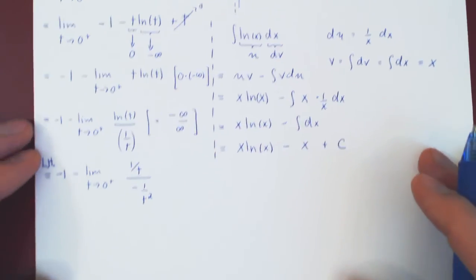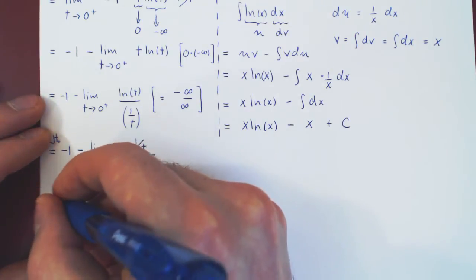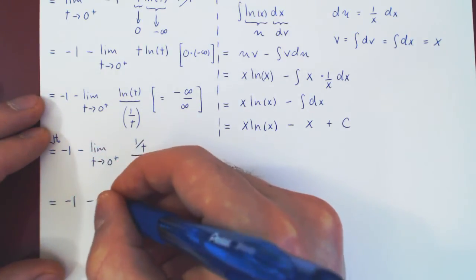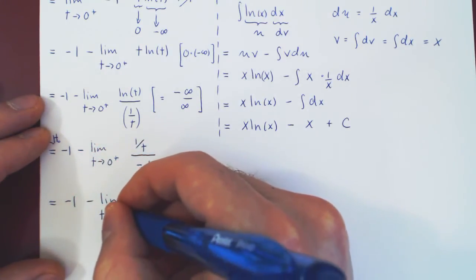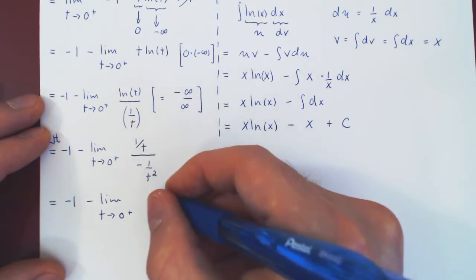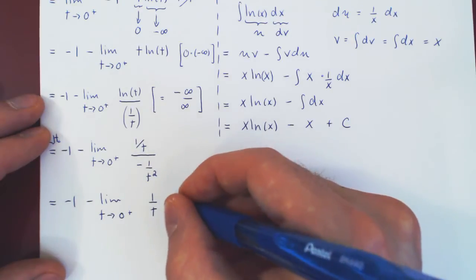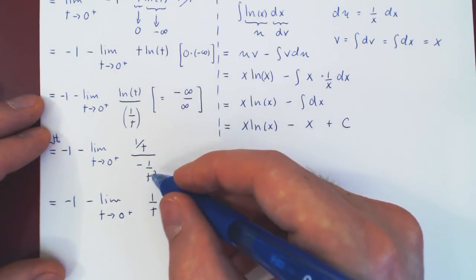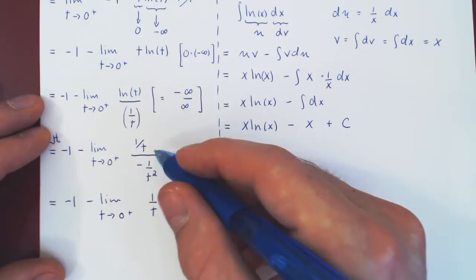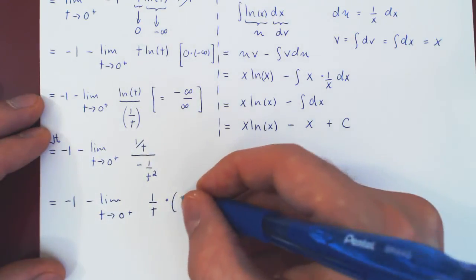Let's simplify the expression. So, we have 1 over t, and again, if you divide by a fraction, you multiply by its reciprocal, which will give you, well, t over negative t squared over negative 1, which is negative t squared.